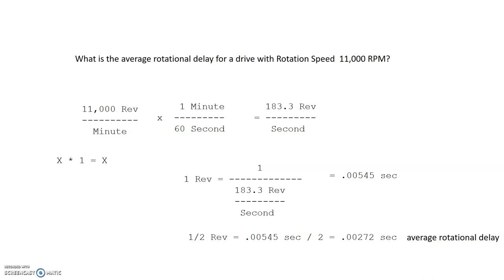That's how long we'd have to wait on average for the sector we're looking for to rotate under the read-write head. Now, as for the transfer time, the transfer time is based on the speed in which the disk is rotating. So based on how many seconds it takes to rotate one revolution, we divide that by the sectors that are on a track.